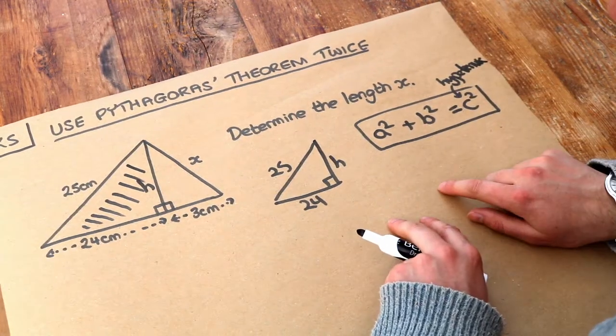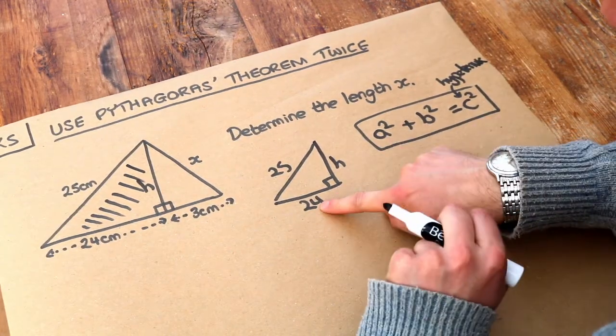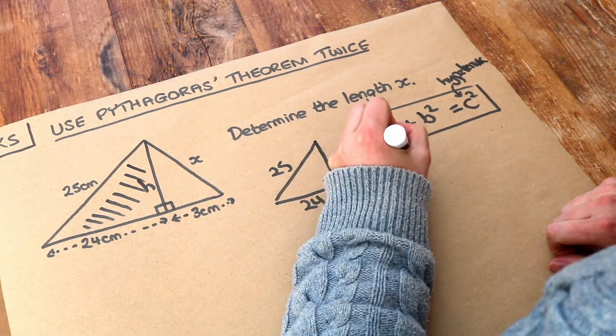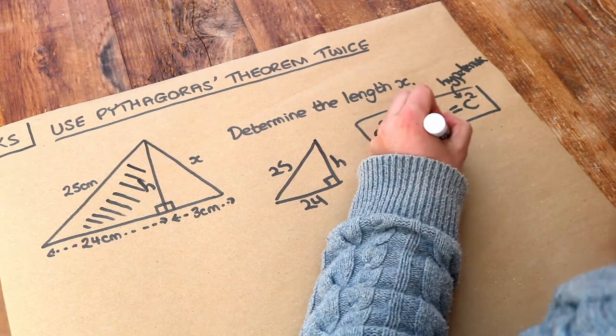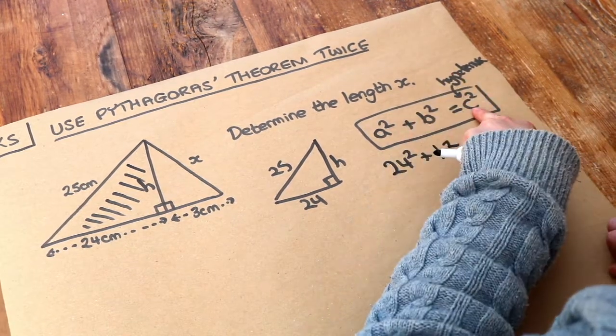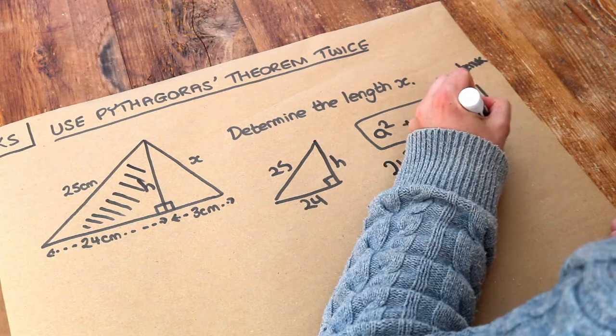So let's substitute our lengths in. Let's take one of the shorter lengths squared, so the 24 squared, then add the other shorter length squared, h squared. It doesn't matter if those two are the other way around. And that is equal to the hypotenuse squared, so the 25 squared.